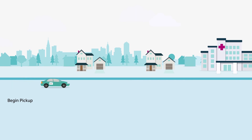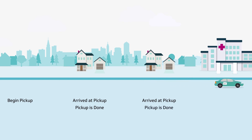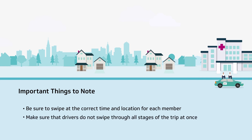If you are multi-loading members in your vehicle, just swipe Begin Pickup, Arrive to Pickup, Pickup is Done, and Drop-off is Done for each member in the same order in which they are being picked up and dropped off. Be sure to swipe at the correct time and location for each member to avoid problems with the trip data or app. Make sure that drivers do not swipe through all of the stages of the trip at once. If they do this, the trip data may look fraudulent and will be flagged for investigation.